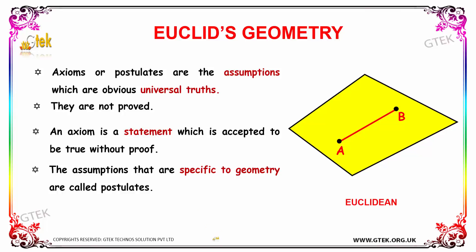Axioms or postulates are considered to be assumptions for obvious universal truths. They are actually not proved. An axiom is a statement which is accepted to be true without proof. Assumptions that are specific to geometry are called postulates.